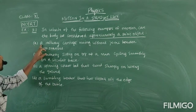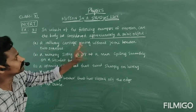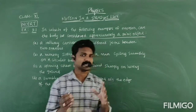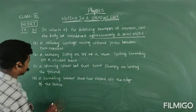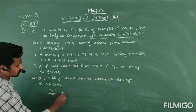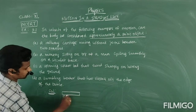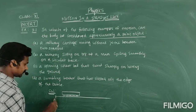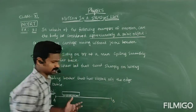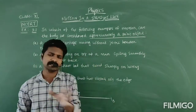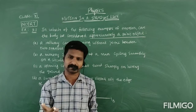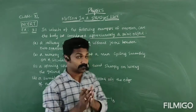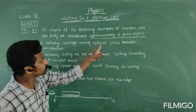The first one: a railway carriage moving without a jerk between two stations. The railway carriage is on a track, between station A and station B — generally minimum 50 km, mostly 100 km apart. They mentioned the railway carriage is moving without a jerk.